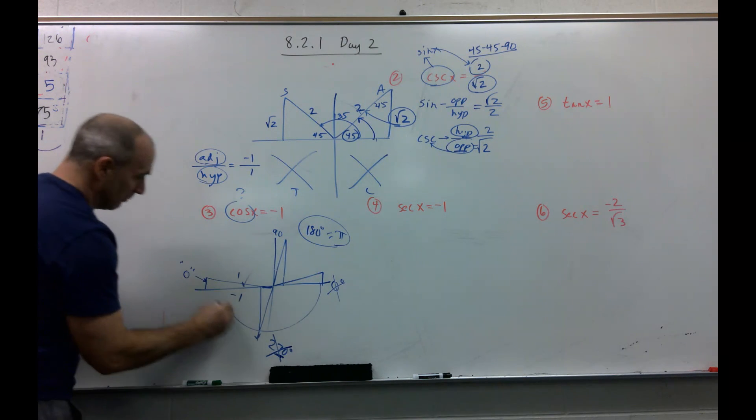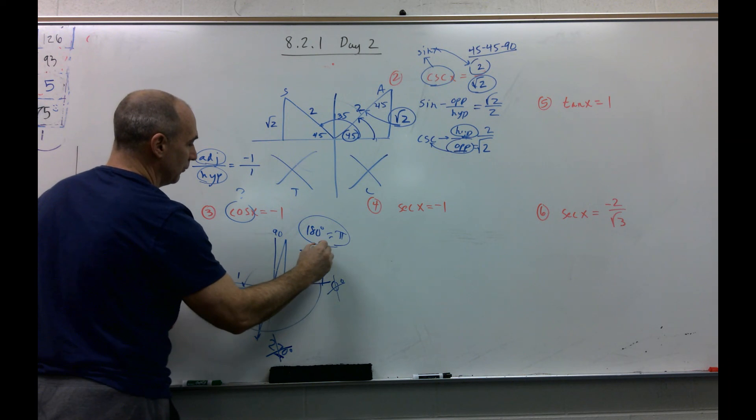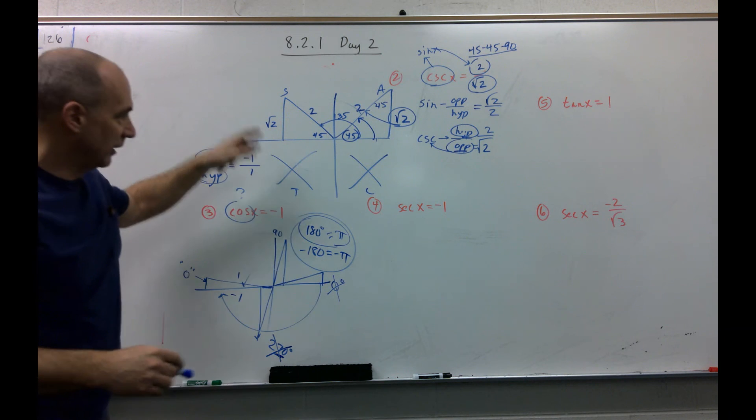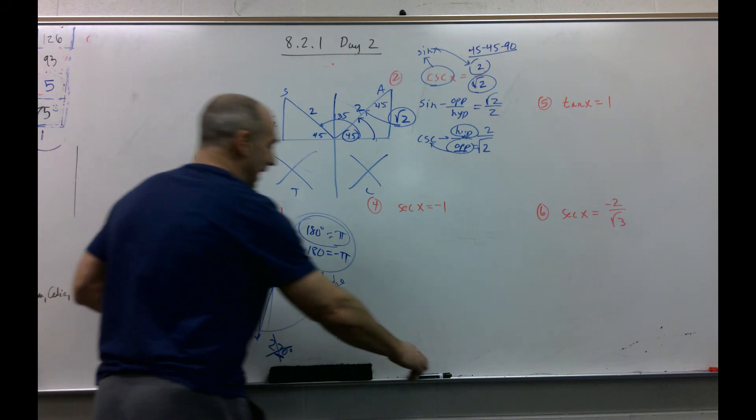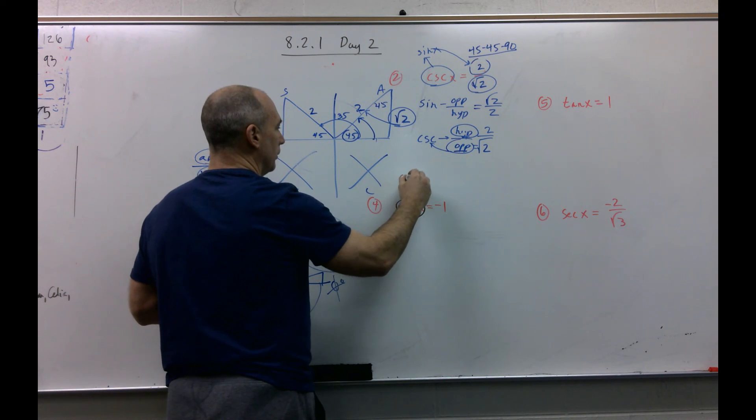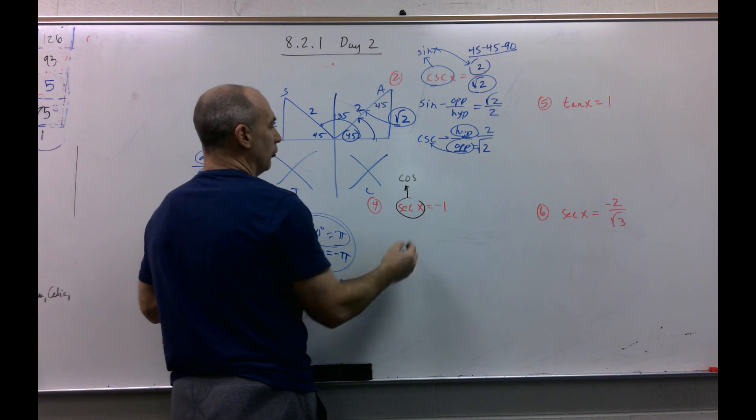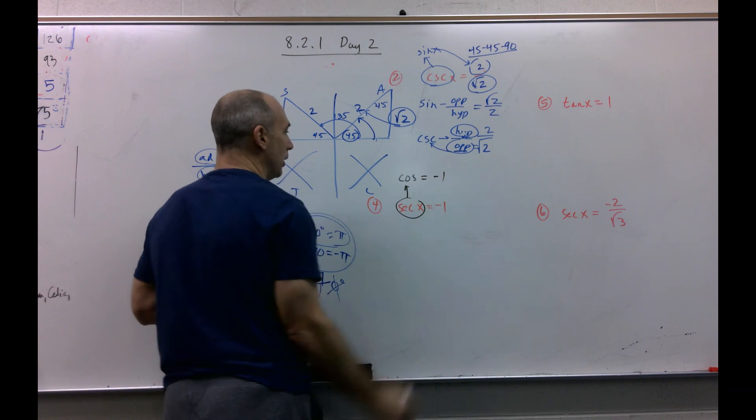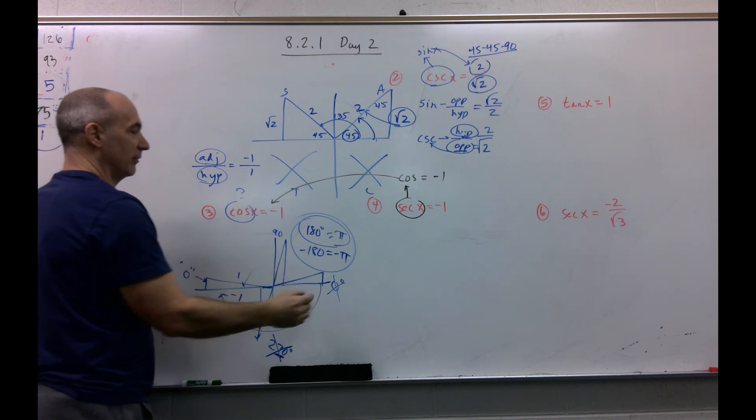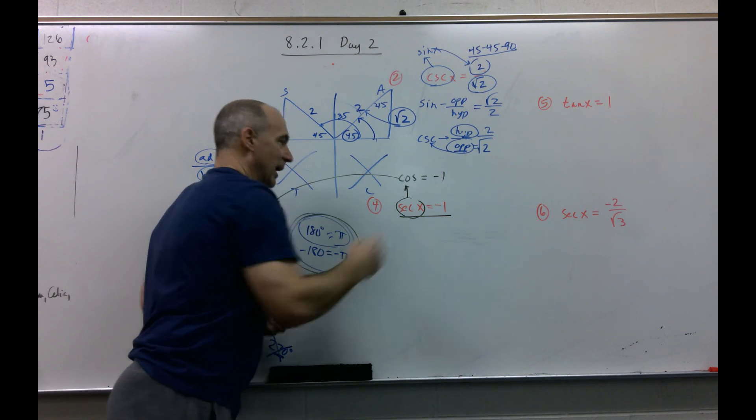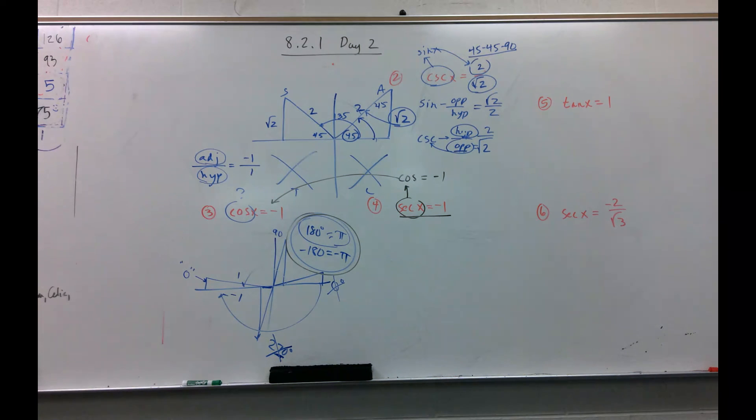Negative 180 or negative pi. And again, I don't know if they're going to require you to think about the positives and negatives. Last one for this one. First of all, what's secant the reciprocal of? Cosine. So if secant is negative one, and I take the reciprocal, I'm going to get negative one. Well, that's the same problem as this. So these are going to be my answers again, even though it's secant. All right, I'm going to hit pause while stopping the video. If you liked the video, like and subscribe.